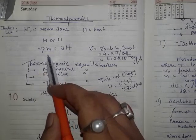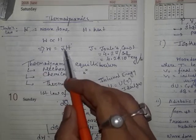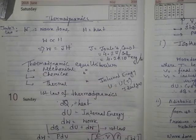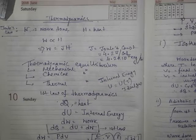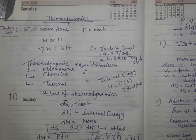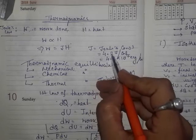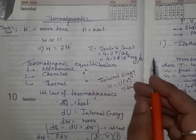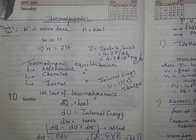So W equals J into H, where J is a proportionality constant, sometimes called Joule's constant. The value of J is actually 4.2 joules per calorie, or 4.2 into 10 to the power 7 ergs per calorie.